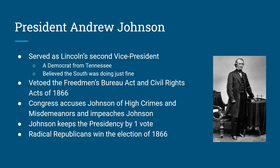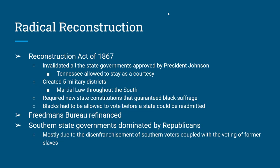Andrew Johnson gets impeached for ignoring what Congress said. Ultimately Johnson does stay president by one vote, but he's pretty much done with any power. The Radical Republicans of 1866 take over and steer everything that happens for Reconstruction from then on. Radical Reconstruction really starts with the Reconstruction Act of 1867. All of the state governments formed in the South are dismantled, the military patrols the South for about three to four years under martial law, state constitutions have to be rewritten, and African Americans must be allowed to vote before a southern state is allowed back into the Union.